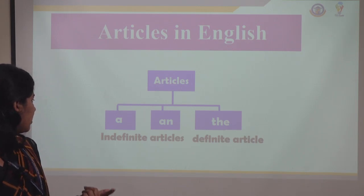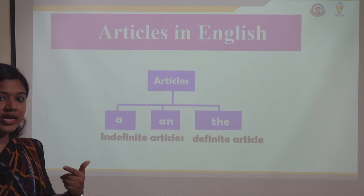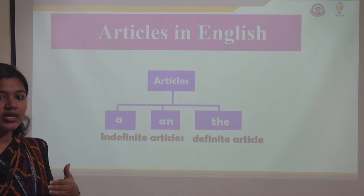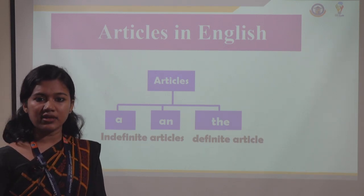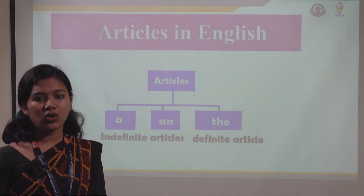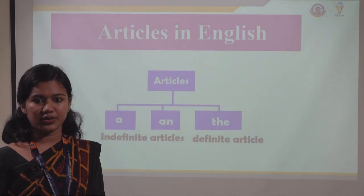In English, we have three articles: 'a', 'an', and 'the'. 'A' and 'an' are defined as indefinite articles, and 'the' is the only definite article in English.